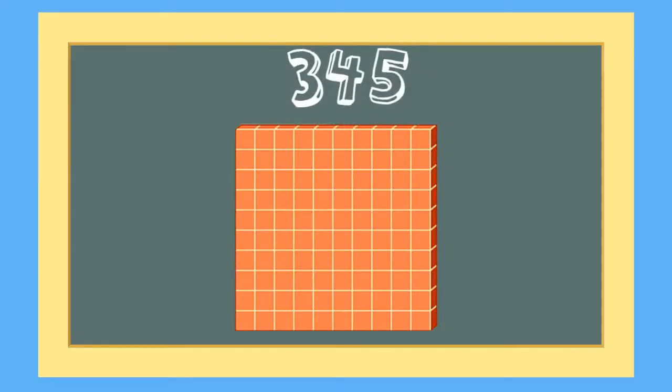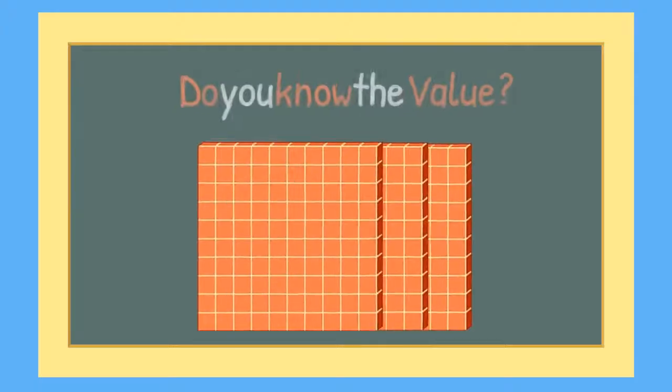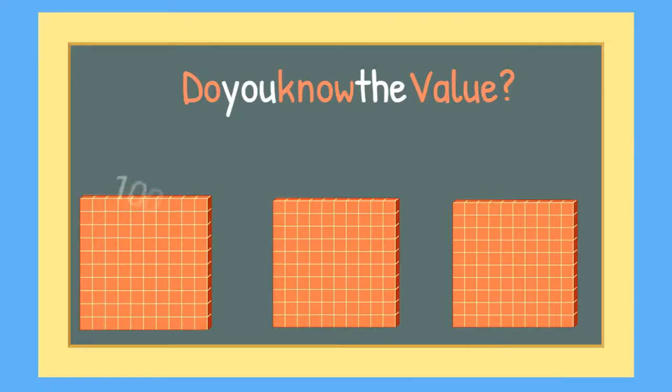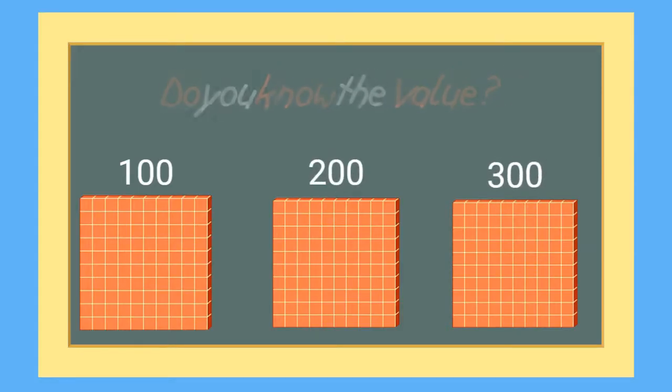In our number 345, there are 3 100's flats. Do you know the value of 3 100 flats? 100, 200, 300. 3 flats equals 300.